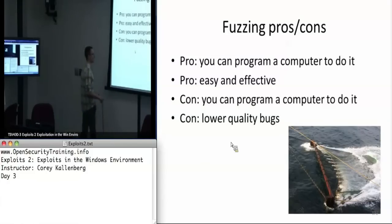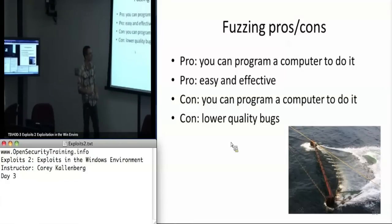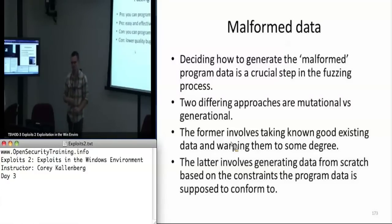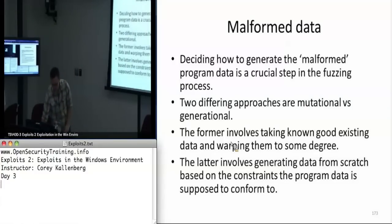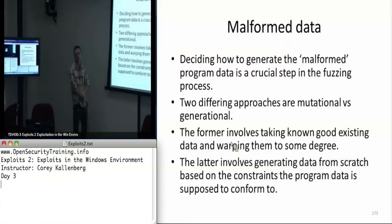My analogy for fuzzing is it's like trawl fishing in the ocean — you just have this big net and you're looking for whatever you can find. The real crux of fuzzing is the malformed data and how you go about generating it.